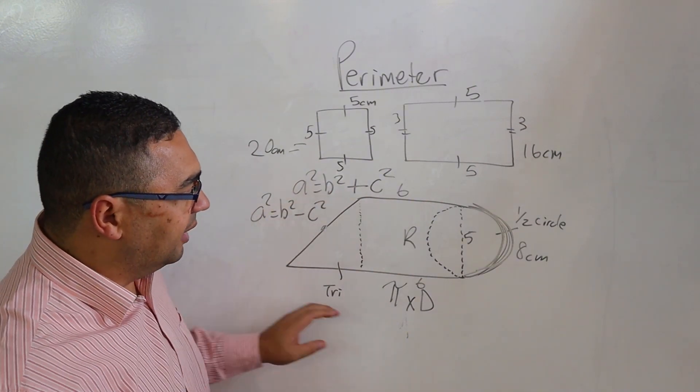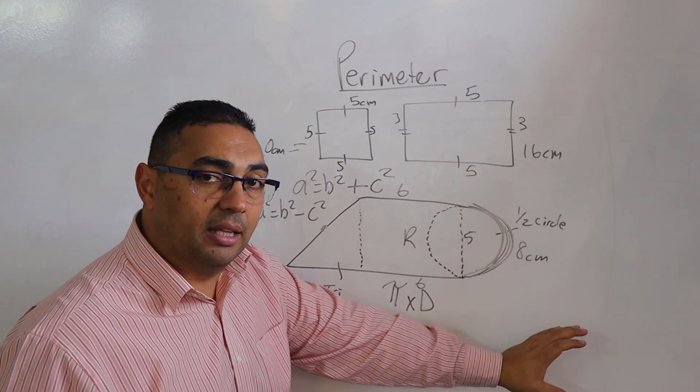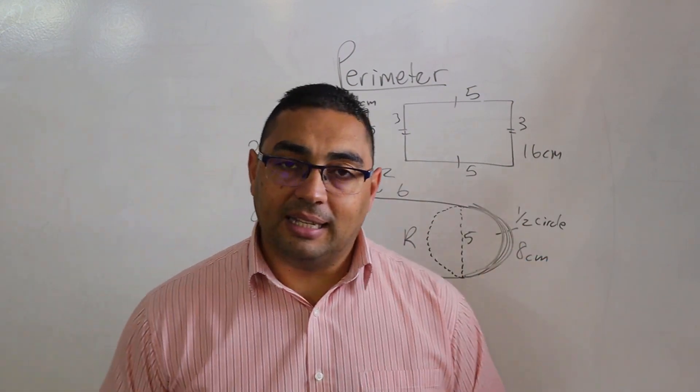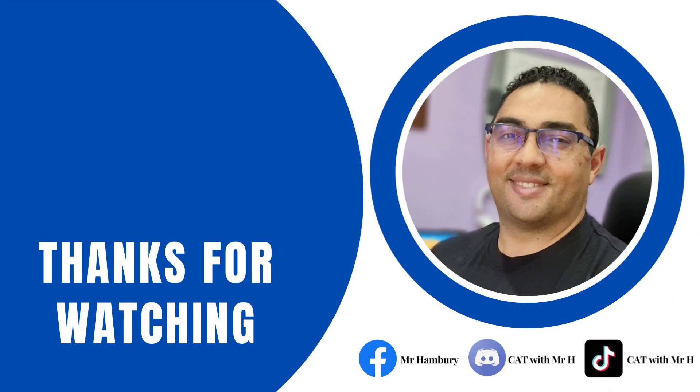Once I've done that and I've worked out all those measurements, I'm going to add all of that together and that's how I get my perimeter. So I'm going to add to it, I'll add that to it, now I can also add that to it.